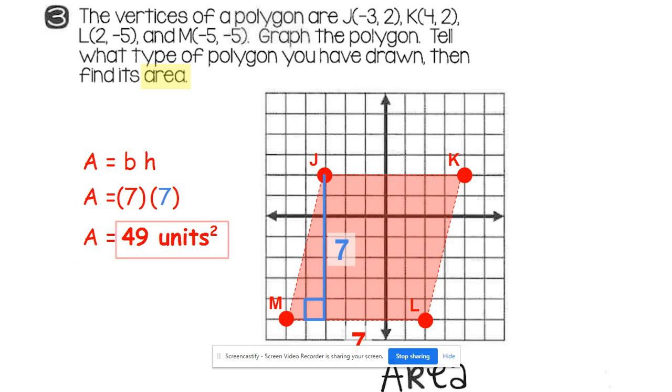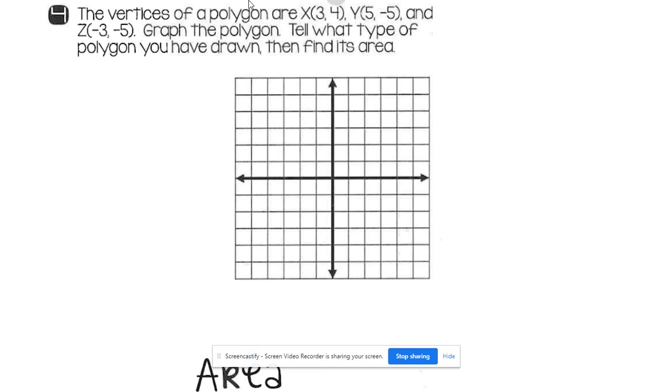We have one more example with an area. Let's take a look. This time there's one, two, three vertices. So it's probably going to make a triangle. Good job if you said triangle. My first point is three, four. So from my origin, I'm going to go right. One, two, three, and up one, two, three, four. There's point X from my origin. I'm going to go right five. One, two, three, four, five, and down five. One, two, three, four, five. There's point Y. Z is negative three, negative five. So negative three, one, two, three to the left and down five. One, two, three, four, five. There's point Z. Go ahead and connect those three vertices and you have your polygon of a triangle.